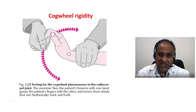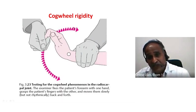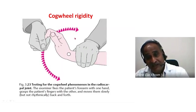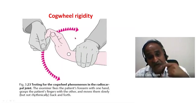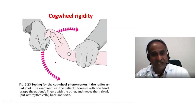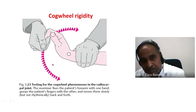Cogwheel rigidity means the resistance gives way in breaks — like cogwheel teeth moving from one tooth to another, similar to how the chain moves in a bicycle from one cogwheel to the next. It moves in a stepwise manner.